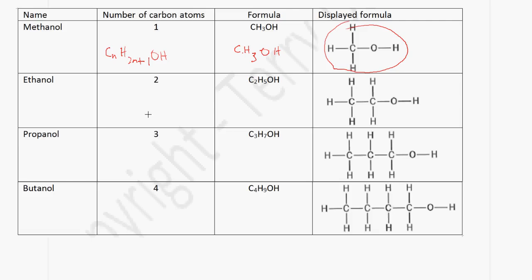In the case of ethanol, we have two carbon atoms. Using the formula: 2 multiplied by 2 is 4, plus 1 gives us 5. So it will be C2H5OH. And this is the displayed formula for ethanol.